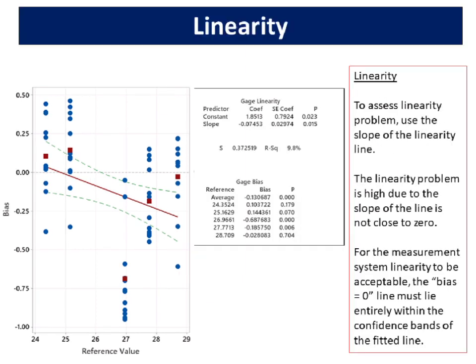Linearity: To assess linearity problems, use the slope of the linearity line. The linearity problem is high due to the slope of the line not close to zero. For the measurement system linearity to be acceptable, the bias equals zero line must lie entirely within the confidence bands of the fitted line.